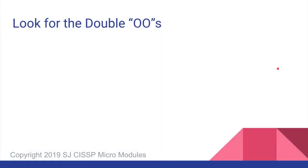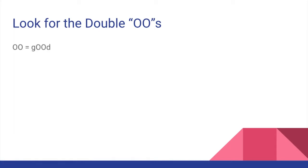The quickest way to memorize the difference between covert channel and backdoor is to look for the double O's. The double O stands for good, because the word good has two O's in it. The word backdoor also has two O's in it, thus it's a good thing.